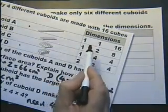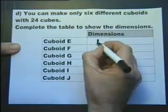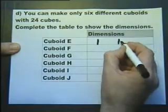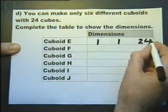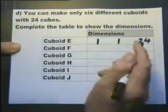So we've got to do the same sort of thing but with 24 cubes. So it could be one high, one wide and 24 long. And these three numbers have to multiply together to give me the 24.